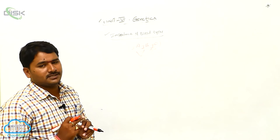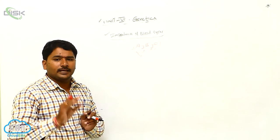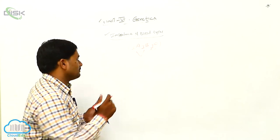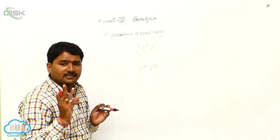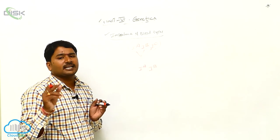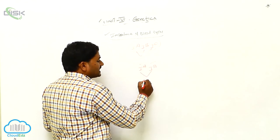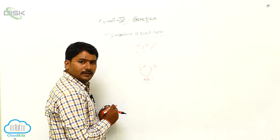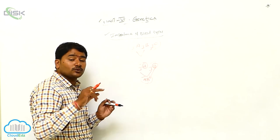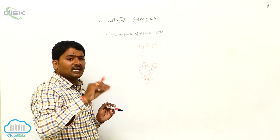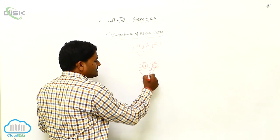What is the meaning of codominance? Each and every allele expresses its character when it is present. As per genetics, when two alleles are present, normally one is dominant and the other is recessive. But here, when I^A and I^B are both present, the character is expressed as AB blood group — A is expressing its character and B is also expressing its character. This is called codominance: each allele expresses its own character, no one is dominant.